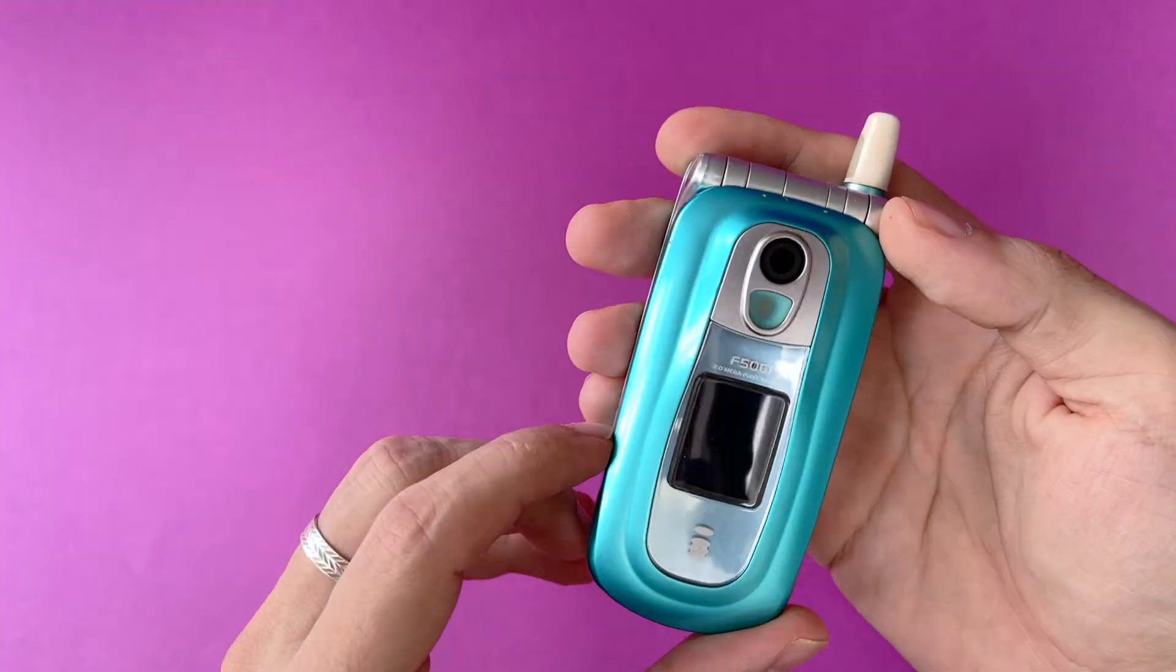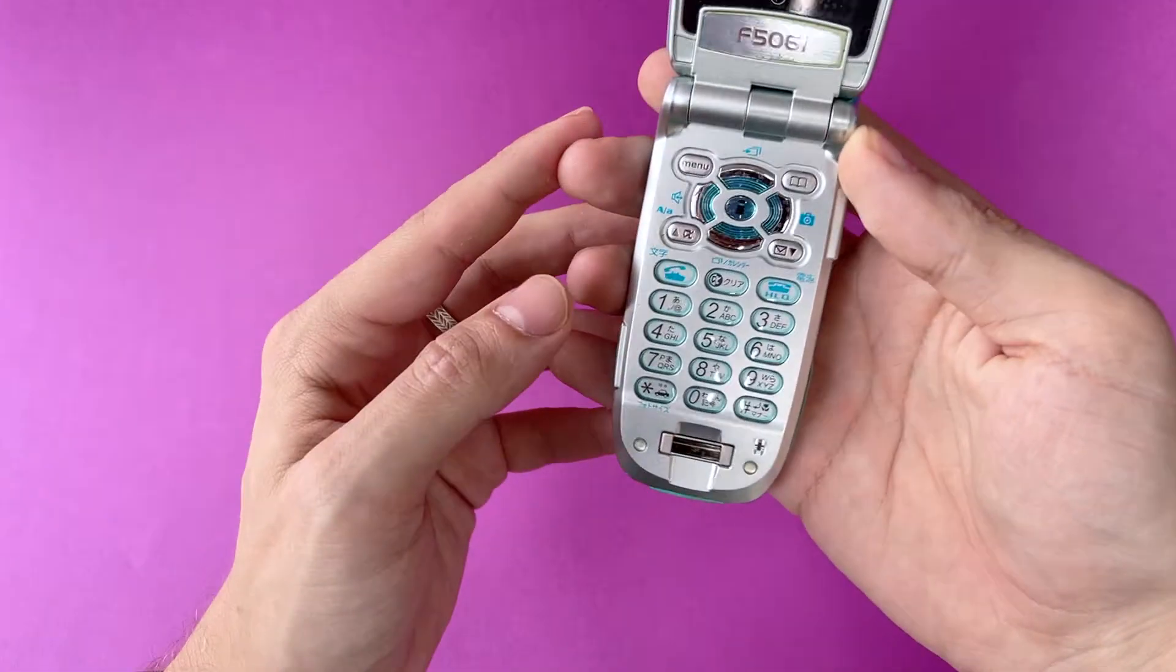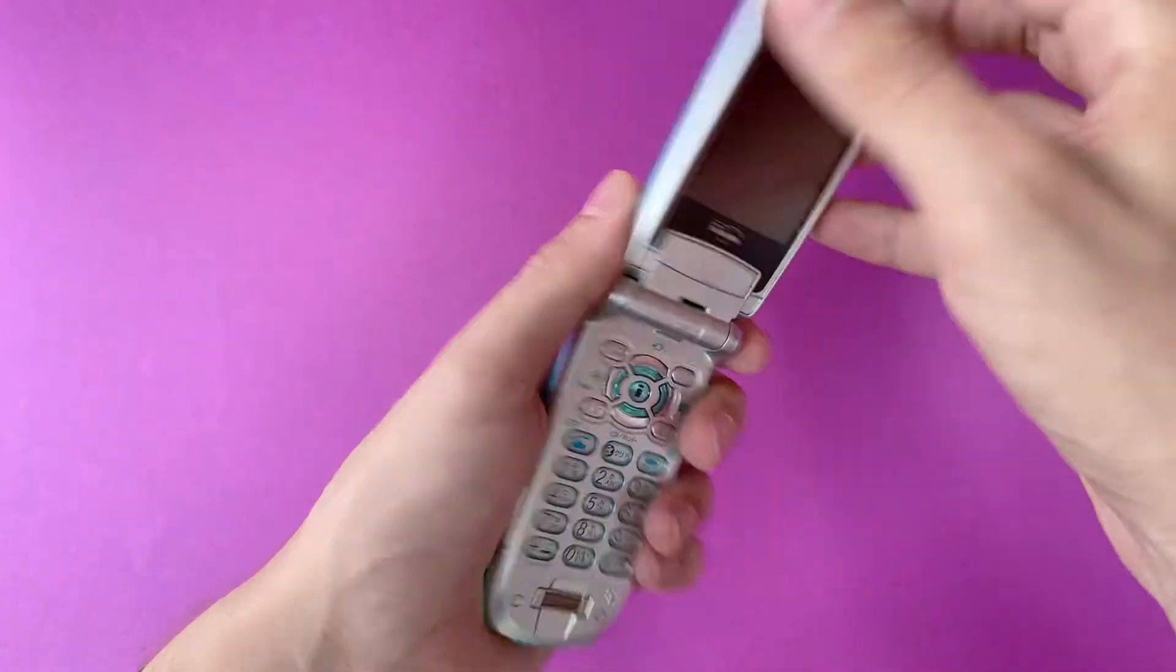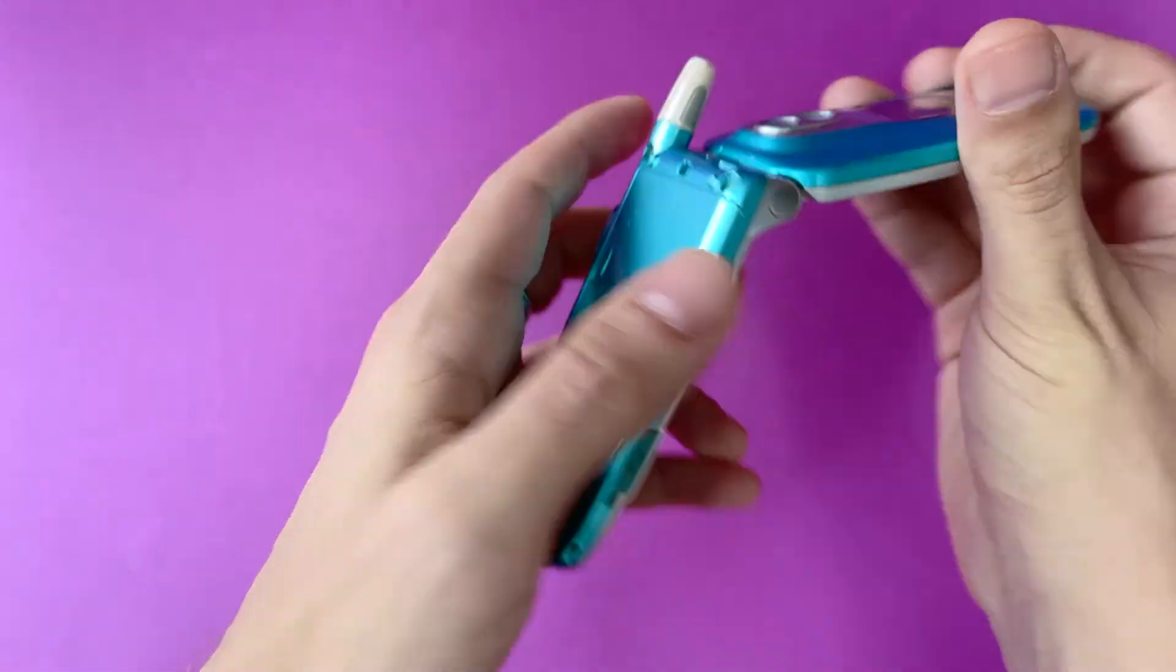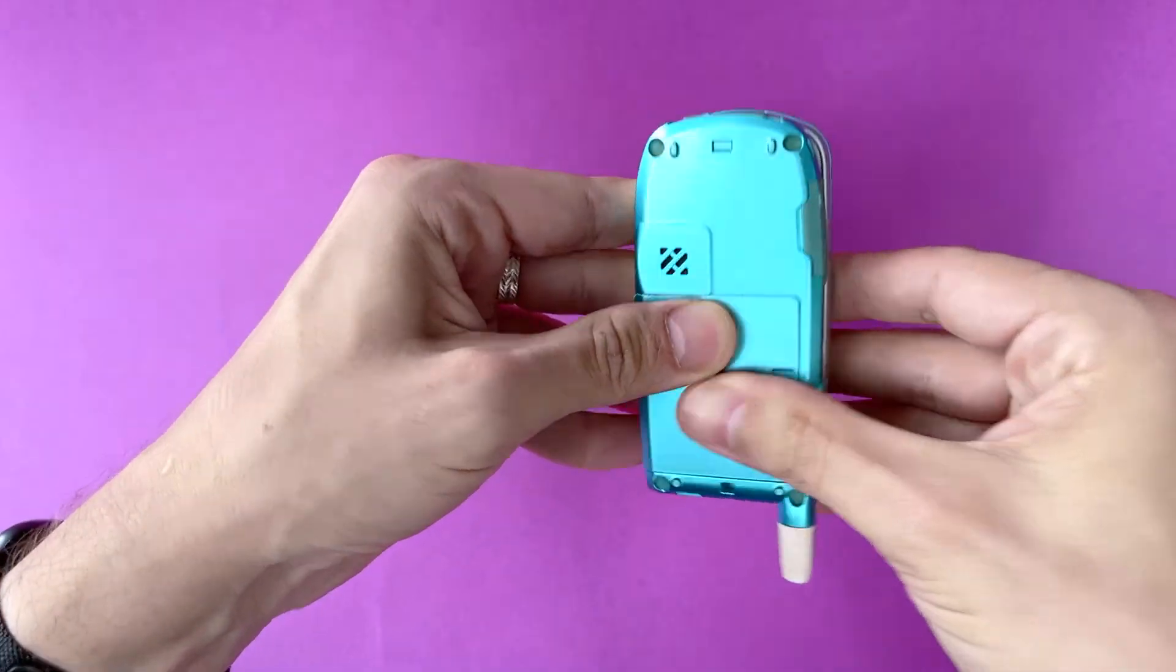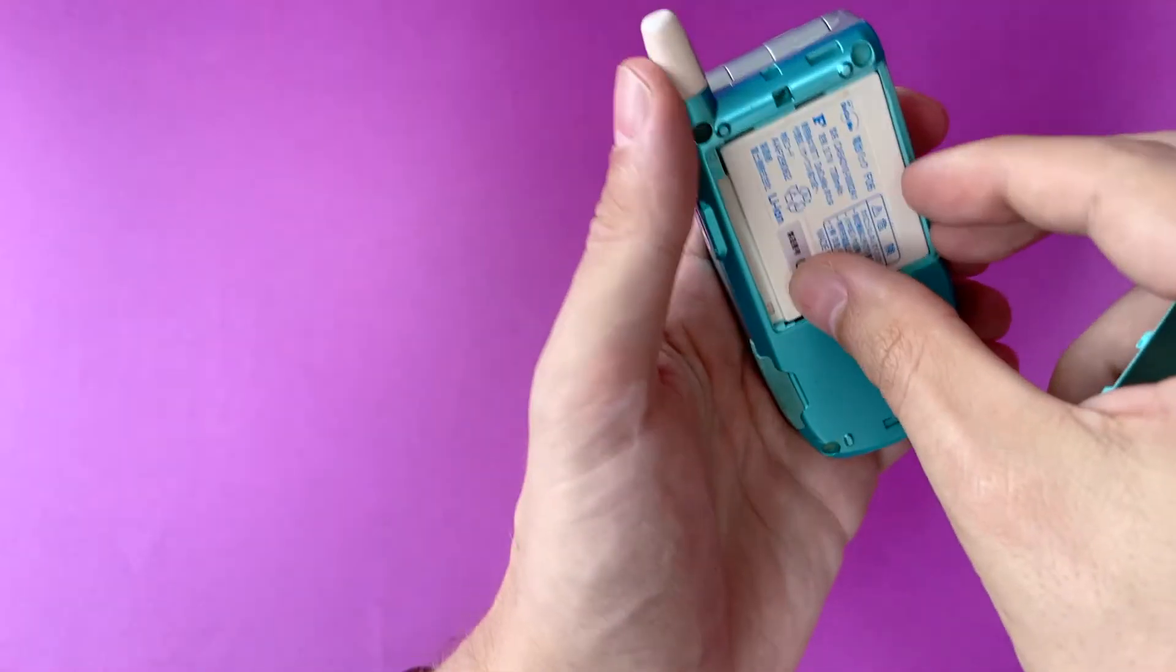...2003 or 2004. You can see the fingerprint scanner, typical Fujitsu fingerprint scanner here. And I don't think this is Felica yet. No, this is a model from I think 2003. Let's see...